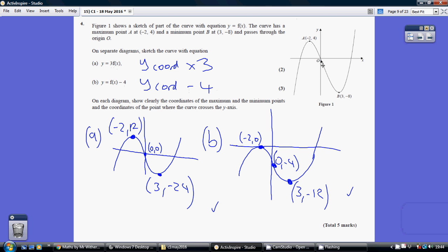Well, (0, 0) remains (0, 0), because the y-coordinate is 0, and 0 times 3 is 0. So that's still (0, 0).